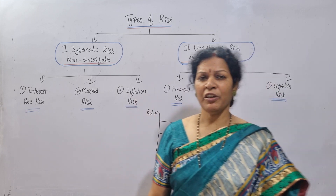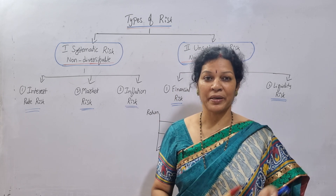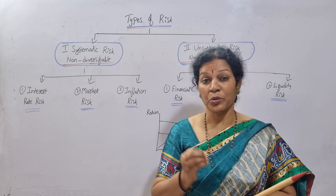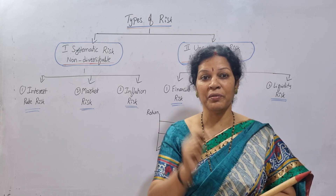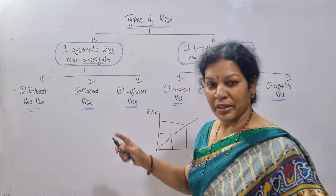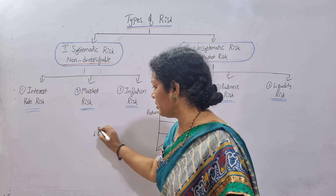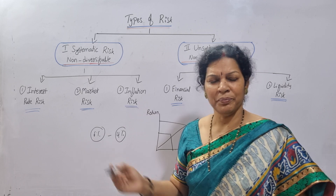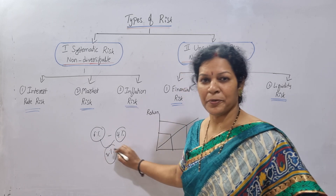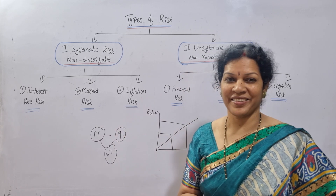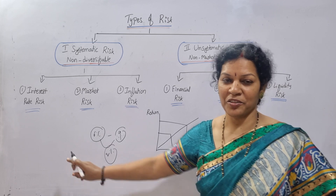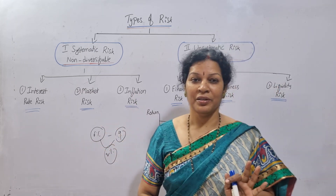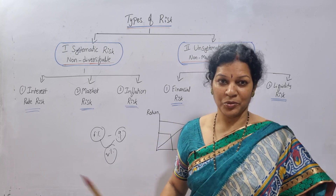Another one is inflation risk. Inflation means a continuous rise in prices — price hiking continuously. Inflation is also not in your hands. Though you are getting some returns, those returns may not be keeping up with the inflation rate. Suppose my income is 6% and the inflation rate is 4% — no problem, I'm getting 2% profit. But if the inflation rate is 9%, then 3% is lost for me. So based on the inflation rate, you will have risk.